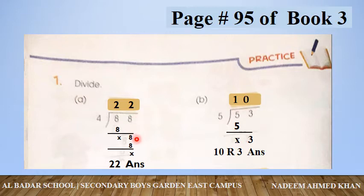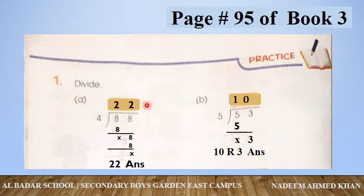اب یہ 8 جو ہے اسے bring down کر لیجیے، نیچے لگا دیں۔ پھر 4 کا table پڑھیے: 4, 2, 0, 8 — 8 یہاں لگا دیجیے۔ اب 8 میں سے 8 subtract کریں — کچھ نہیں بچا۔ تو اس سوال کا جواب 22 ہے۔